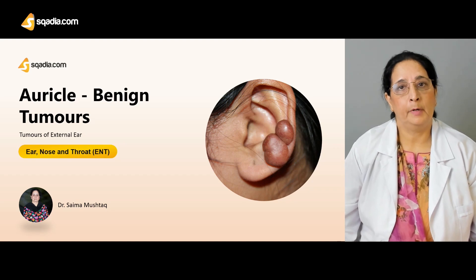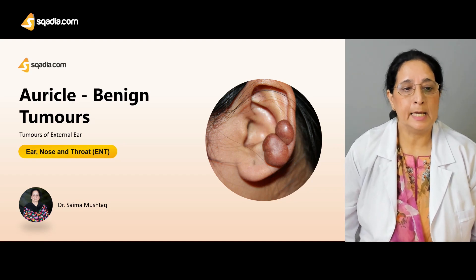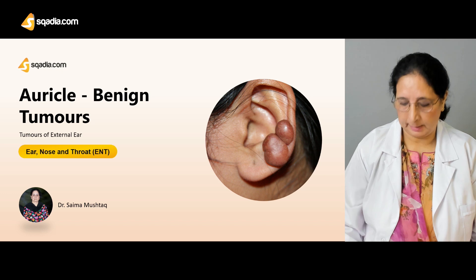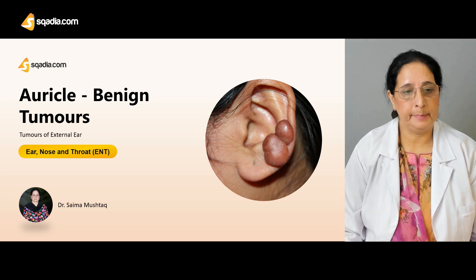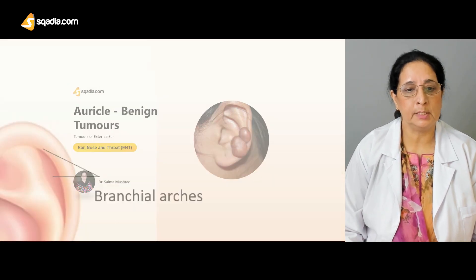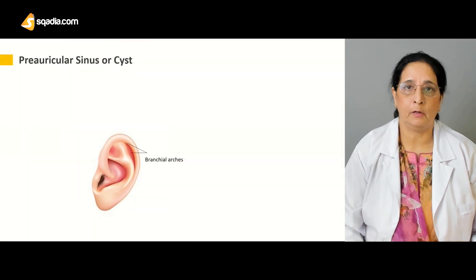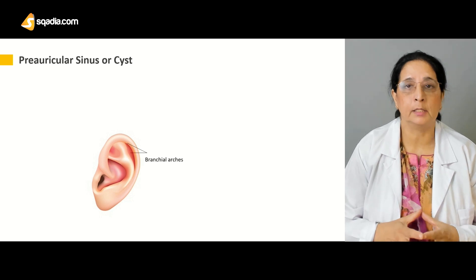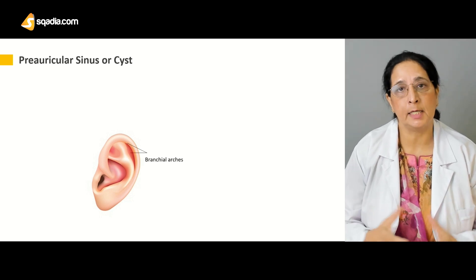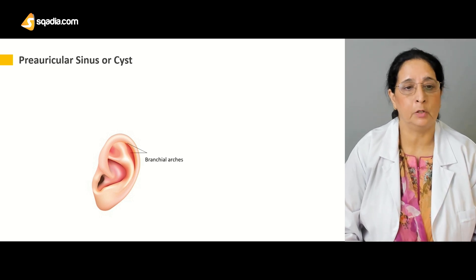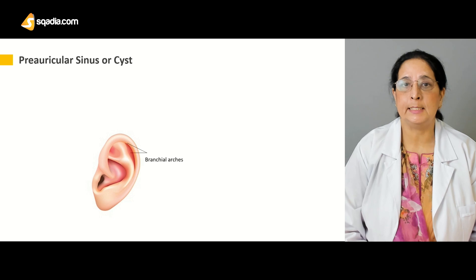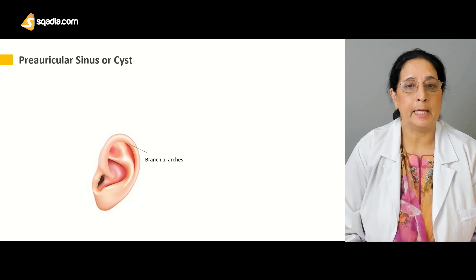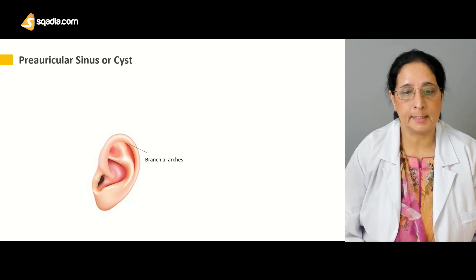Now we will talk about the benign tumors of the auricle. We already summarized them — what are the different benign tumors of the auricle? The first one is the preauricular sinus or cyst.